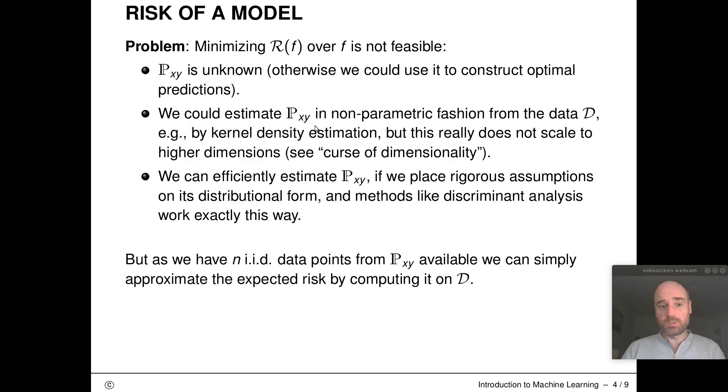What we could do instead is place some rigorous assumptions on this data generating distribution capital P. We can for example assume that its distributional form is some variant of a Gaussian, and methods like discriminant analysis work exactly this way. But we want to study here an alternative route which is much more common in machine learning.